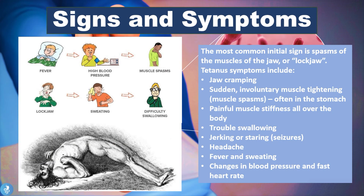The most common initial sign is spasms of the muscles of the jaw, or locked jaw. Other signs and symptoms of tetanus include jaw cramping, sudden involuntary muscle tightening — often in the stomach, giving a rigid or board-like abdomen — painful muscle stiffness all over the body, troubled swallowing, jerking or staring seizures, headaches, fever and sweating, and changes in blood pressure and heart rate, both of which usually increase.